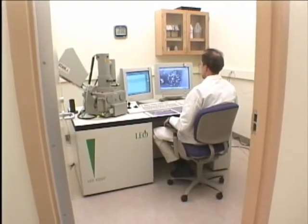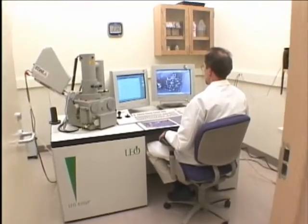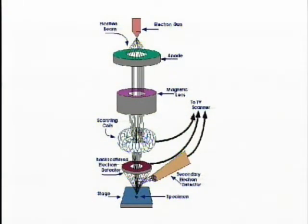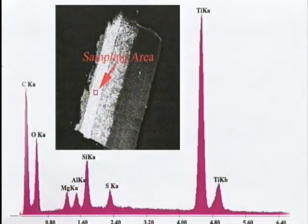Another important instrument is a scanning electron microscope. One use is to characterize properties of trace evidence using electrons rather than light. When struck with a beam of electrons, the molecules making up the evidence emit secondary electrons and x-rays. The energy of the emitted x-rays is unique to the elements that make up the molecules of the source material. These unique characteristics are recorded as a graph, allowing the examiner to identify the elements making up a molecule in a sample particle. The instrument is particularly useful for identifying inorganic compounds, such as explosive residues.